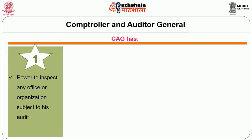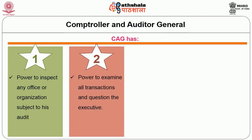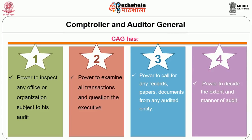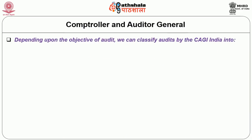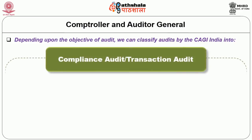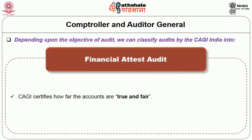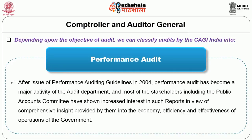The CAG has the power to inspect any office or organization subject to his audit, examine all transactions and question the executive, and decide the extent and manner of audit. Depending upon the objective, audits by the CAG are classified as: compliance or transaction audit, in which selected transactions for a particular financial year are examined; financial attest audit, in which the CAG certifies how far the accounts are true and fair; and performance audit. After the issue of performance auditing guidelines in 2004, performance audit has become a major activity, providing comprehensive insight into the economy, efficiency and effectiveness of government operations.